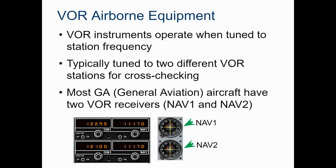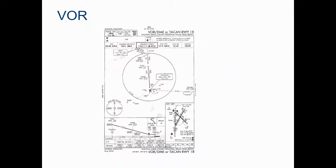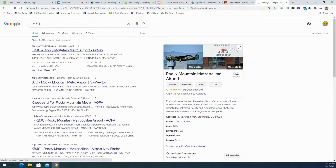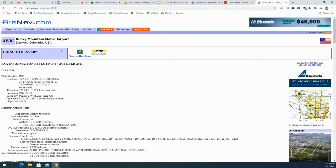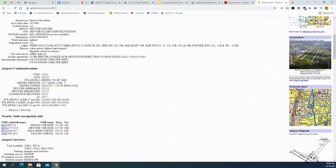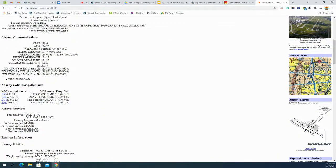Usually you tune two different VOR stations to cross-check. Most aircraft will have two of these nav gauges. If you want to find VOR information for a particular station, you can Google 'VOR' and the station name - for example 'VOR KBJC' for the Broomfield one. Clicking on results will show you information for that VOR and sometimes a graphic, or just navigational aid data.